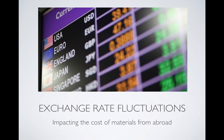Next we're going to look at exchange rate fluctuations. This really impacts the cost of materials bought from overseas by domestic companies. If we are operating in the United States and sourcing materials from around the world, if the dollar becomes weaker, those materials appear to be more expensive. The price abroad might stay the same, but because the dollar has gotten stronger or weaker, it can impact our cost. If the dollar is weaker, it becomes more expensive for an American company buying from abroad. If the dollar gets stronger, then suddenly those materials become cheaper.